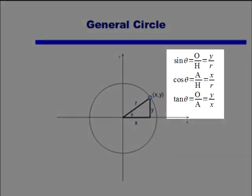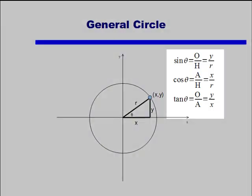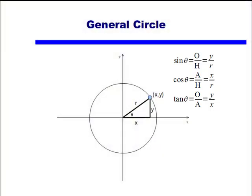We should remember that the sine, cosine, and tangent functions can be represented both as opposite over hypotenuse, adjacent over hypotenuse, and opposite over adjacent, but also in terms of y, x, and r as well. Sine is y over r, cosine is x over r, and tangent is y over x.